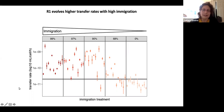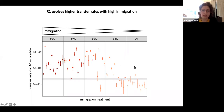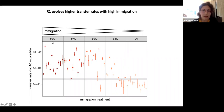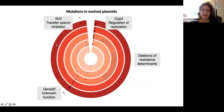In the next step, to characterize the mechanism for this, I sent all of those evolved clones for Illumina sequencing, and we mapped mutations to the sequence of the ancestor.